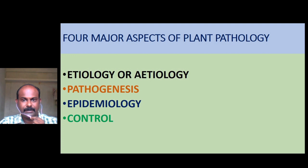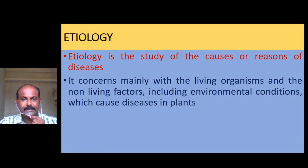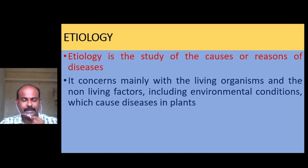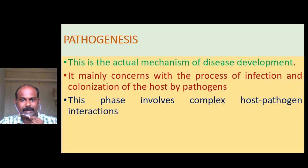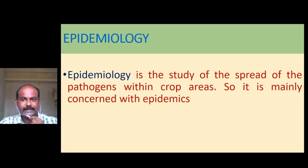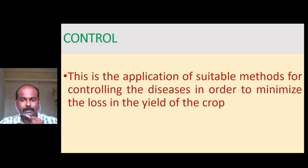There are four major aspects of plant pathology: etiology, pathogenesis, epidemiology, and control. Etiology is the study of the causes or reasons of diseases, concerning living organisms and non-living factors including environmental conditions. Pathogenesis is the actual mechanism of disease development, involving the process of infection and colonization of the host by pathogens, including complex host-pathogen interactions. Epidemiology is the study of the spread of a pathogen within crop areas, mainly concerned with epidemics. Control is the application of suitable methods to minimize crop yield loss.